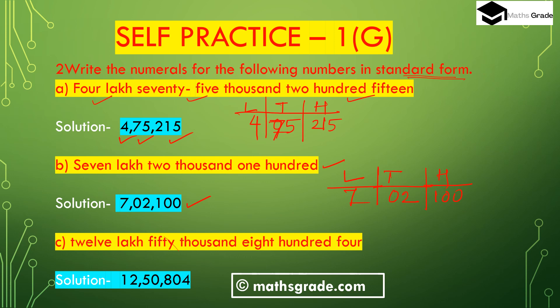Part (c): 12 lakh 50 thousand 804. In the Indian system of numeration, 12 in the lakh place, 50 in the thousands place (two digits, five zero), and 804 in the hundreds place (eight zero four). So the number is 12,50,804.